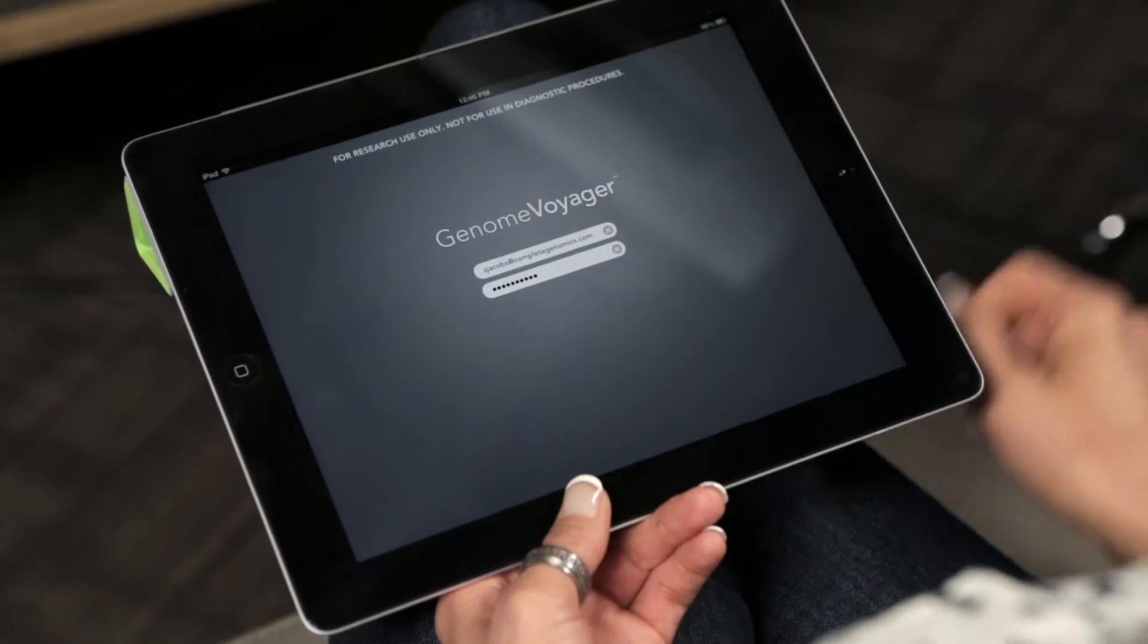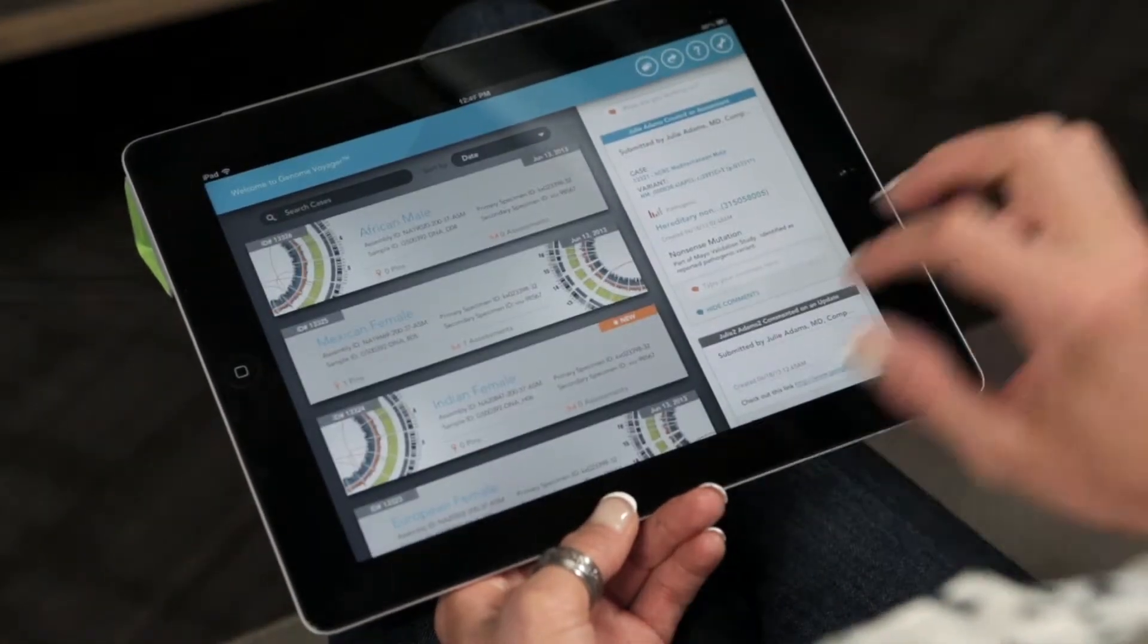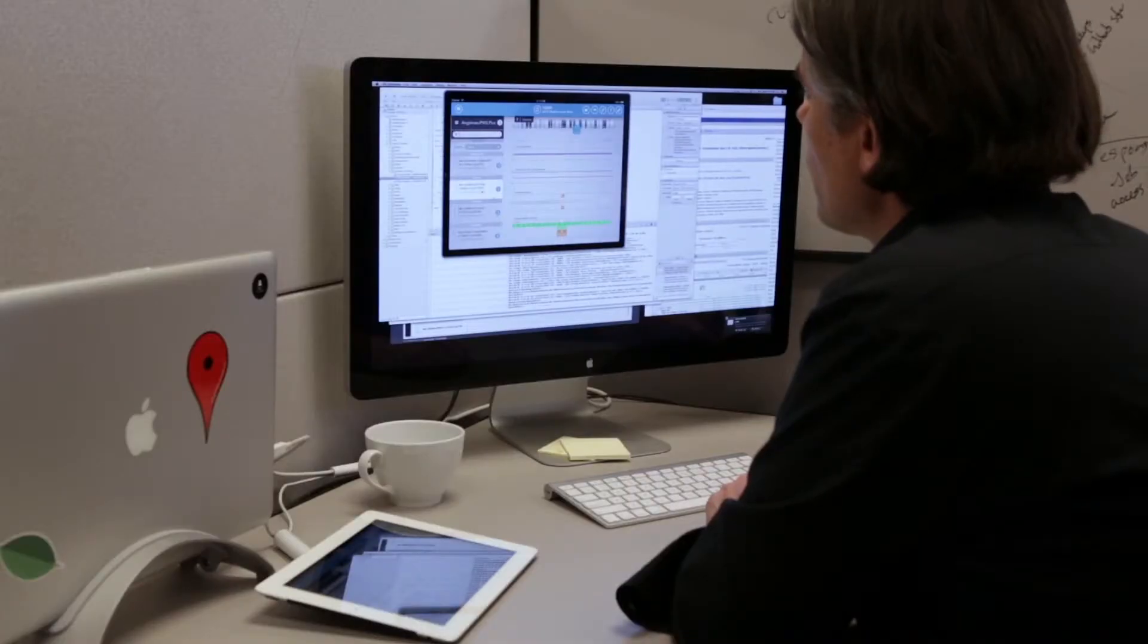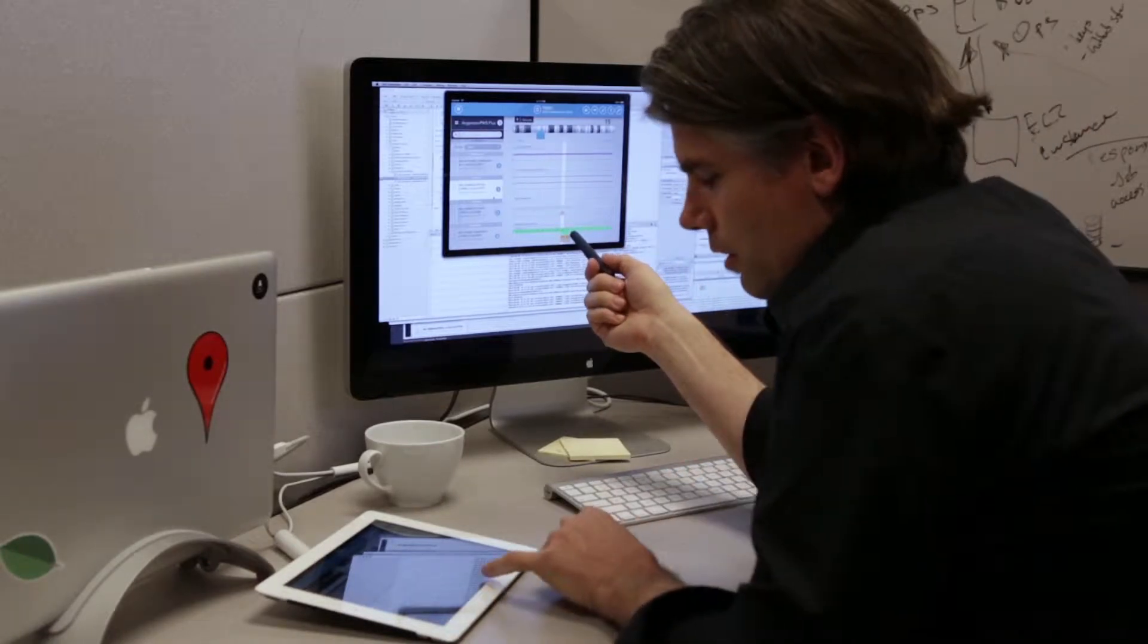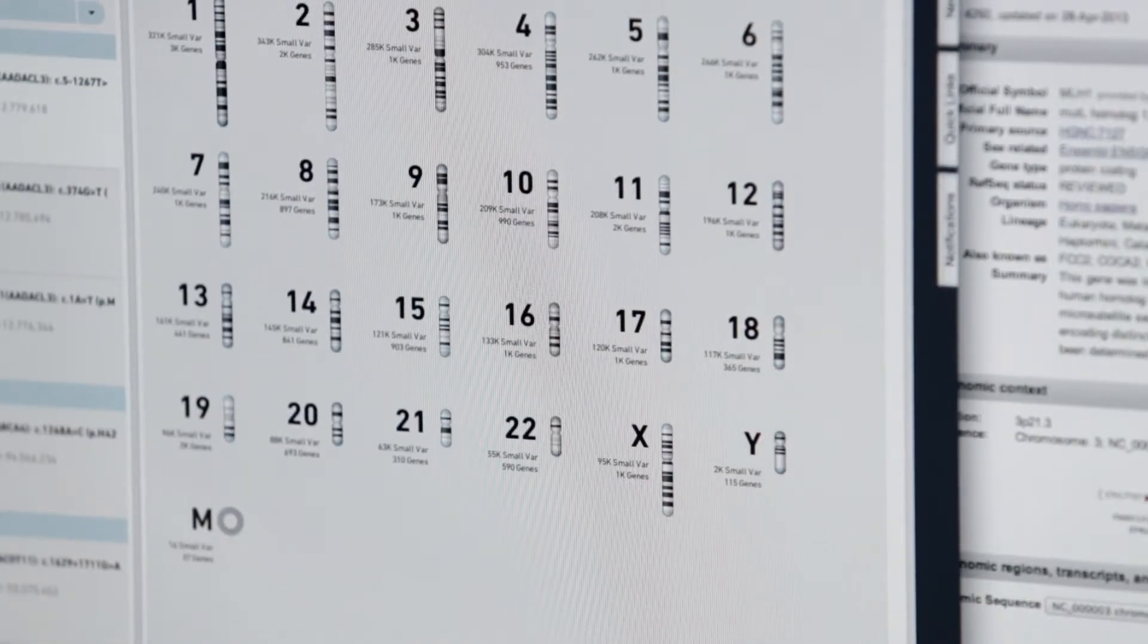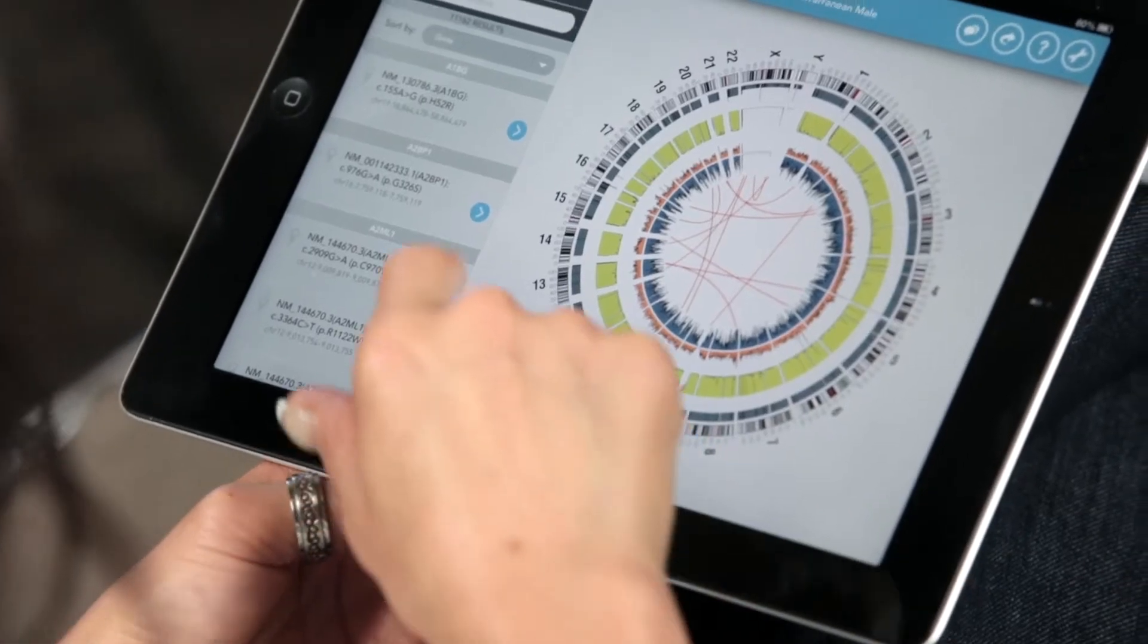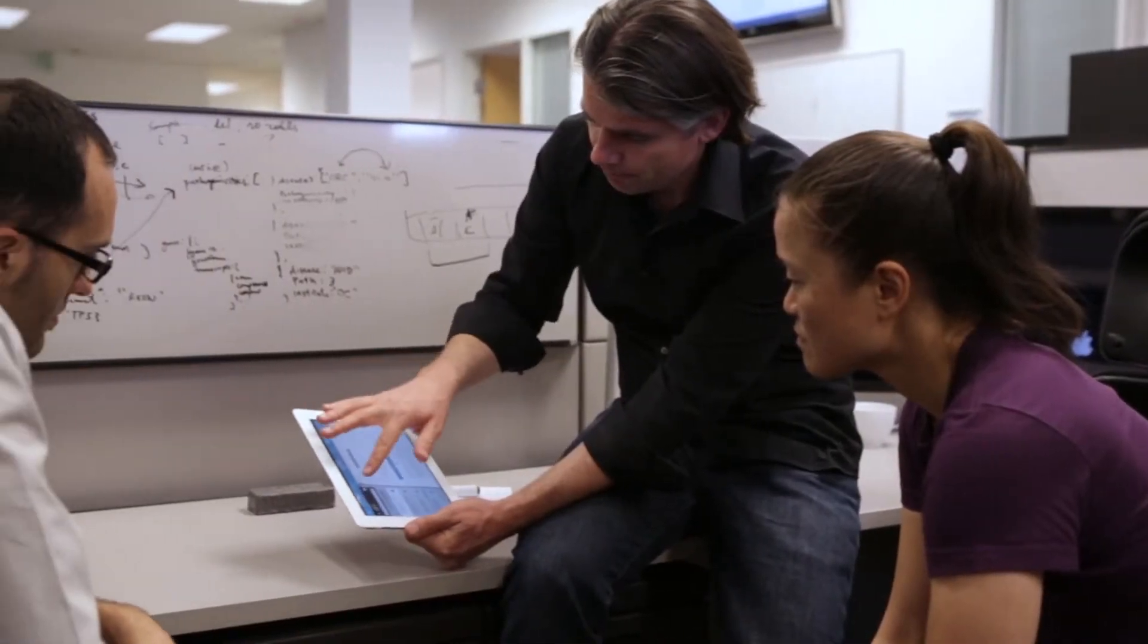Genome Voyager is a research use only application which is designed to enable users to analyze and interpret genomic information. It enables users to visualize genomes. It enables them to quickly filter down to the most relevant variants for a given case. And it also provides an innovative, collaborative platform for users to be able to exchange information and knowledge about the meaning of the variants that they see.